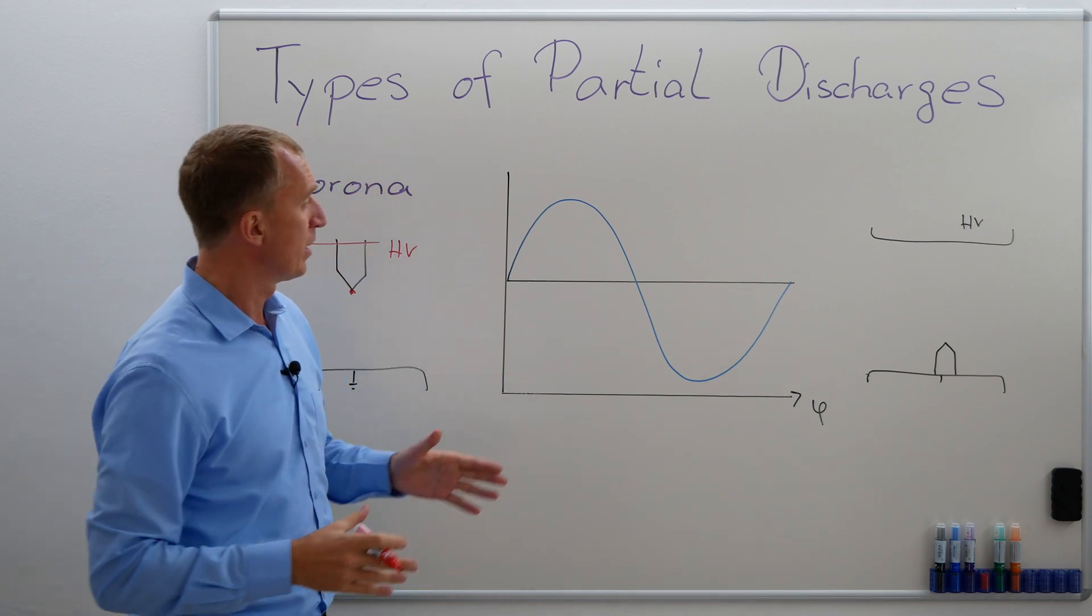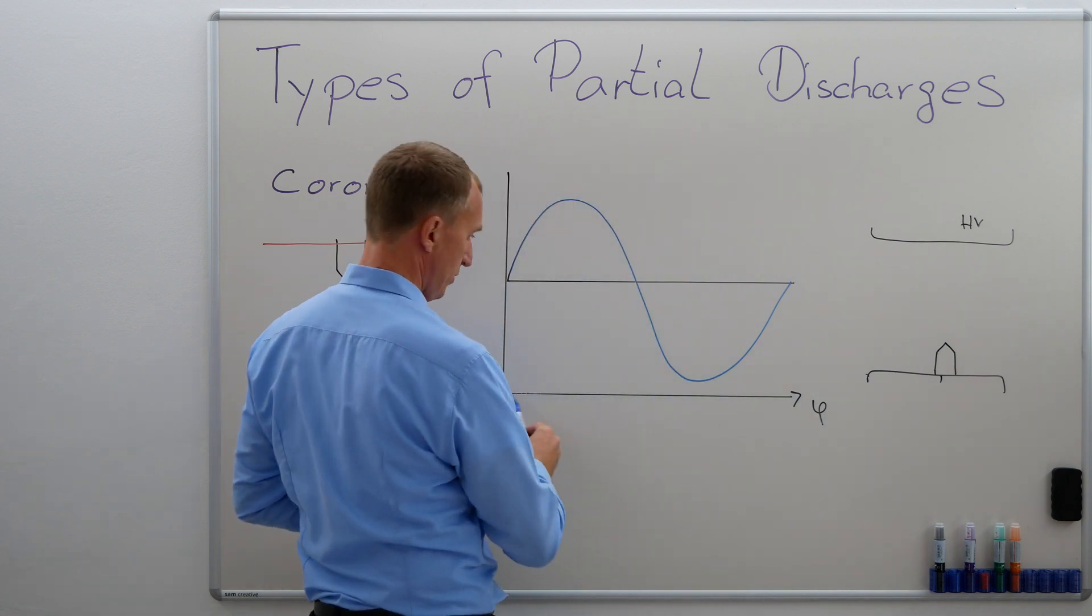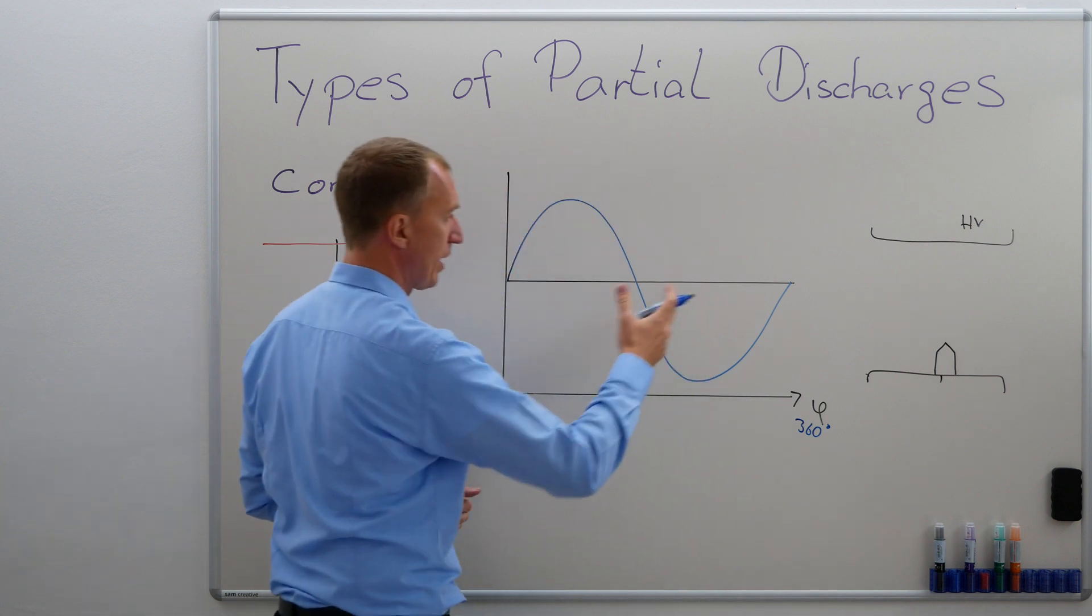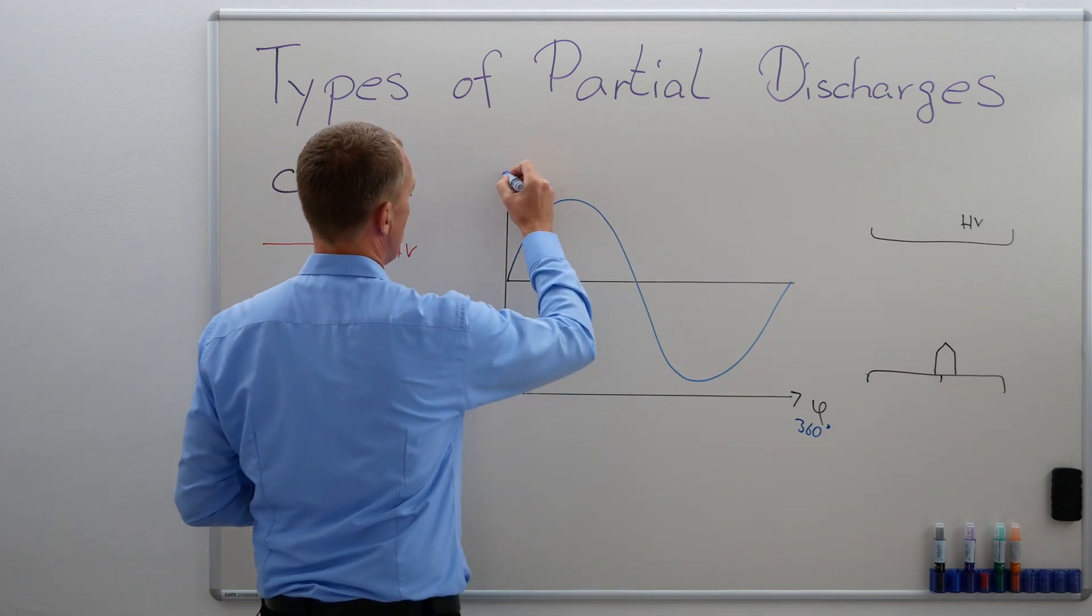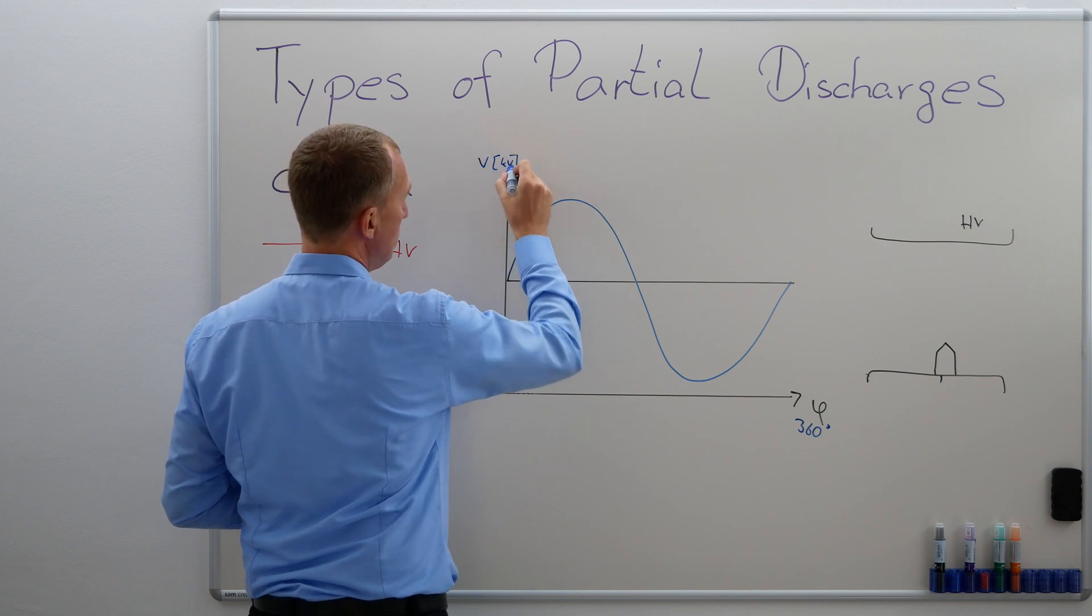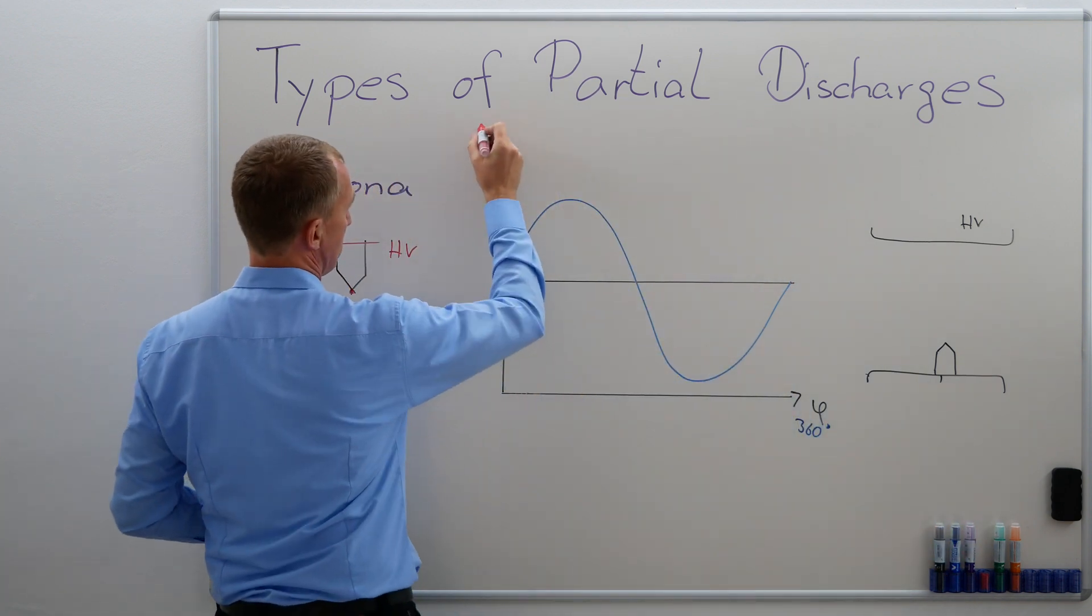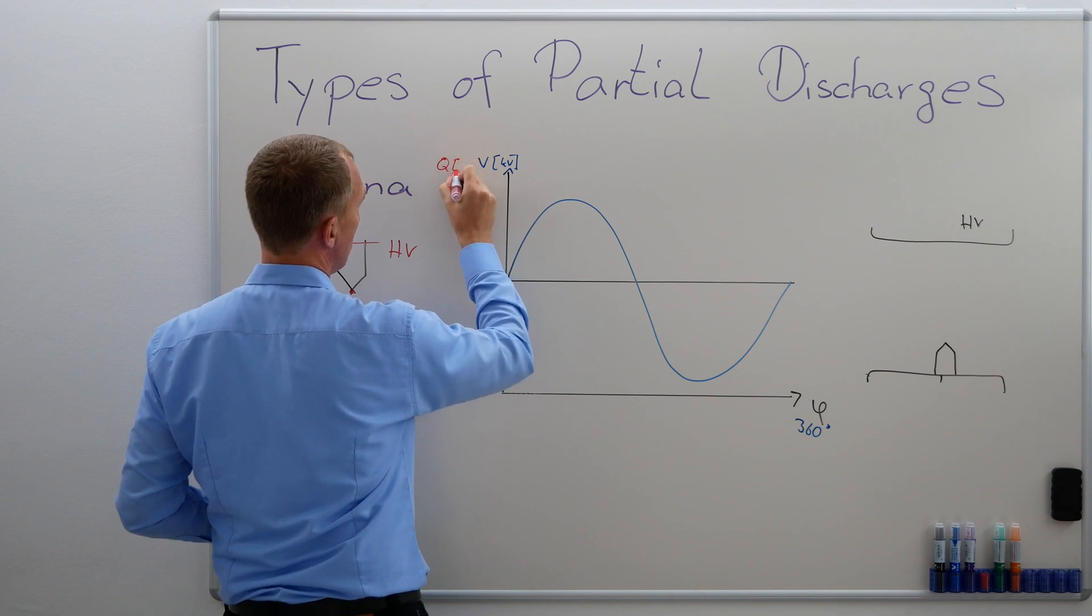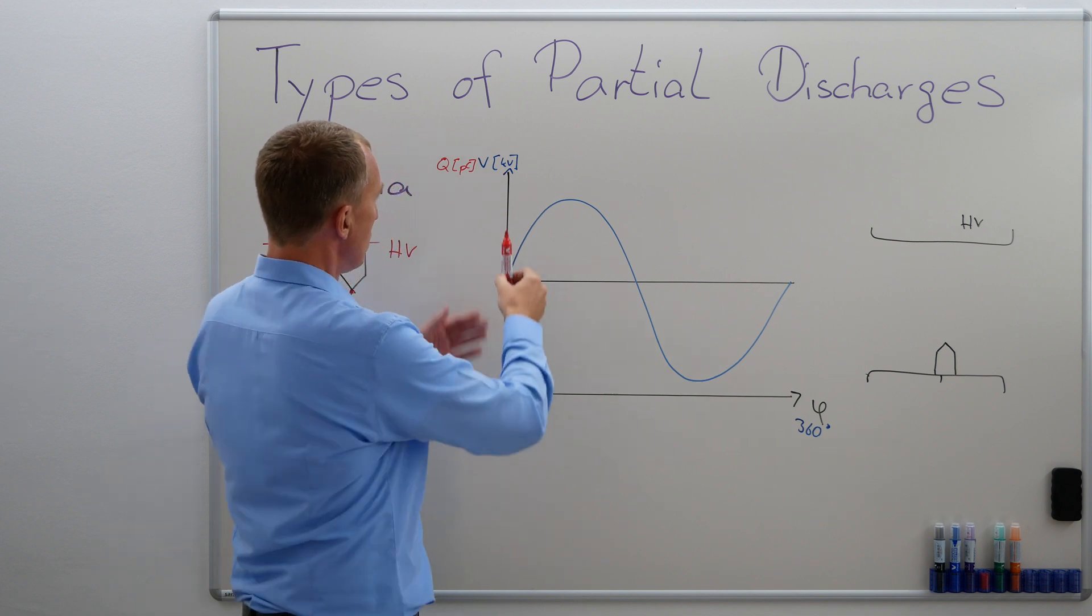Small ones but multiple ones. So if I'm looking at my PRPD diagram over here, so here I have my phi, so this would be 360 degrees of my AC voltage that I'm going to measure partial discharge in, right? So I could say this is voltage, let's say, in KV. And also, it's not only this, but in another scale, it is Q in picocoulomb. And I'm going to use red here for the time being.